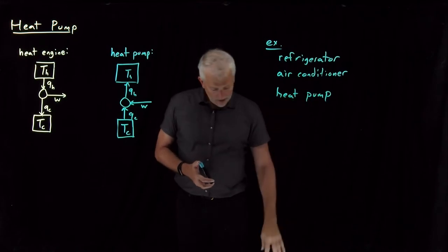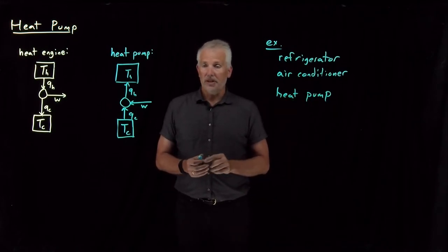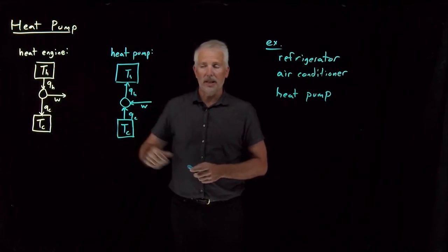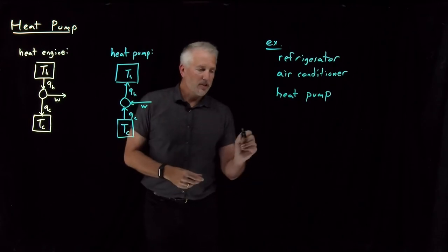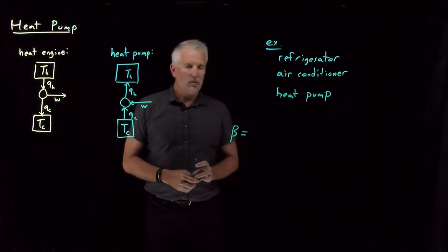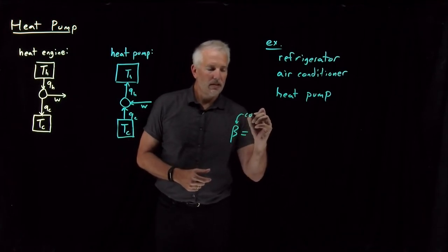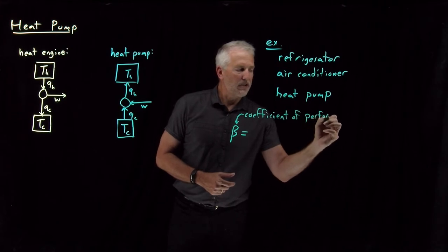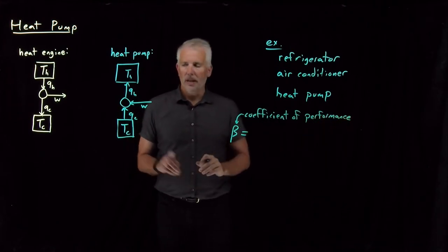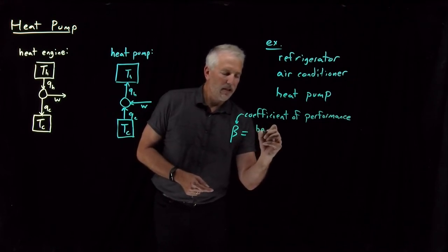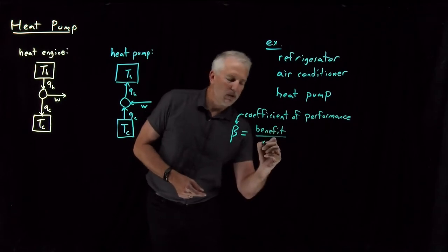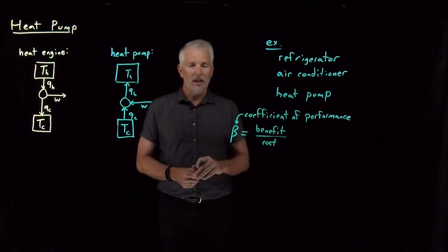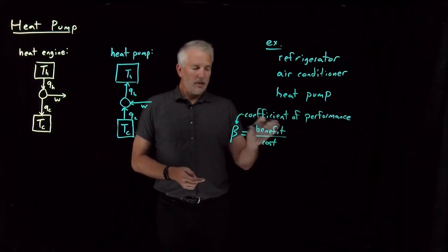So what we want to say about heat pumps is — their efficiency. How do we talk about the efficiency of a heat pump? The efficiency of a heat engine is related to the ratio of temperatures, T-cold to T-hot. For a heat pump, we don't actually call it efficiency — we use a different term. We use beta, which we call a coefficient of performance, or COP. It will become clear why we don't call it efficiency. The definition of benefit and cost depends on whether we're using it to heat something up or cool something down.